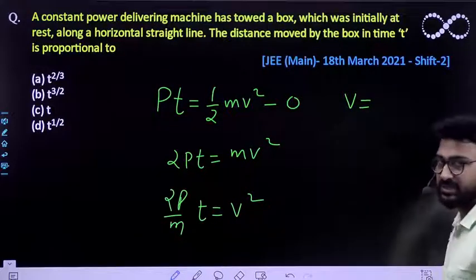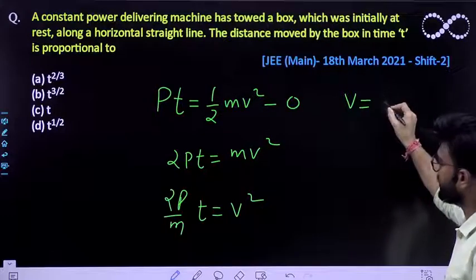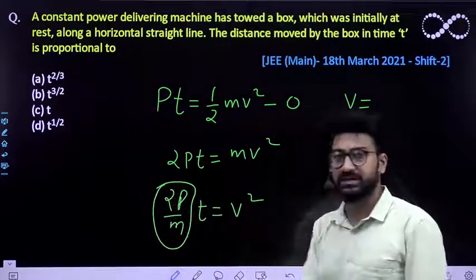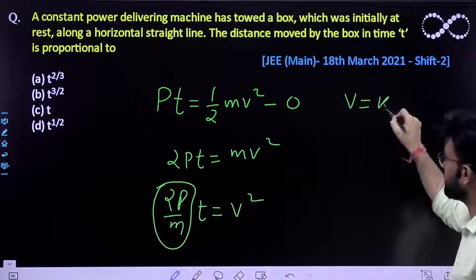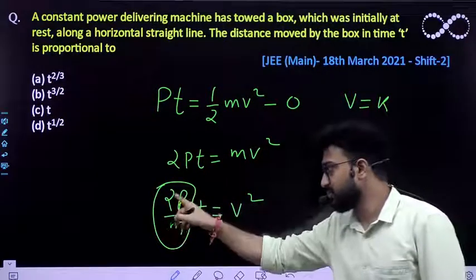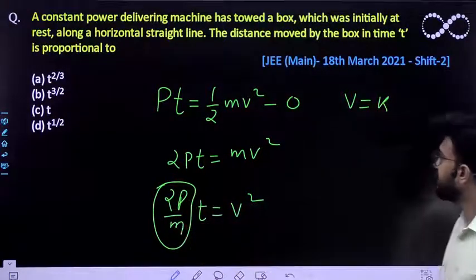What will you do? We'll differentiate. If this is a constant, let it be a constant k. Let k be the constant, k equals root of under root 2P by m, let it be k. So v equals k times t to the half.